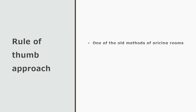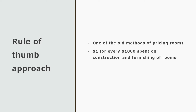The rule of thumb approach of room pricing, as I mentioned earlier, is one of the oldest methods of pricing rooms. If you need to sell rooms, sell them at an appropriate cost so that the business is profitable. According to this approach, the hotel will charge $1 for every $1,000 spent on the cost of construction and furnishing of rooms. The catch is that this approach mentions that there should be 70% occupancy maintained in the hotel.